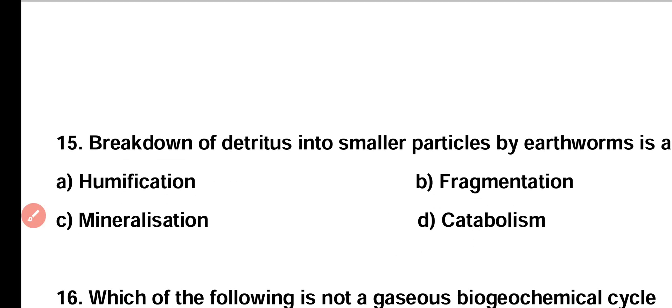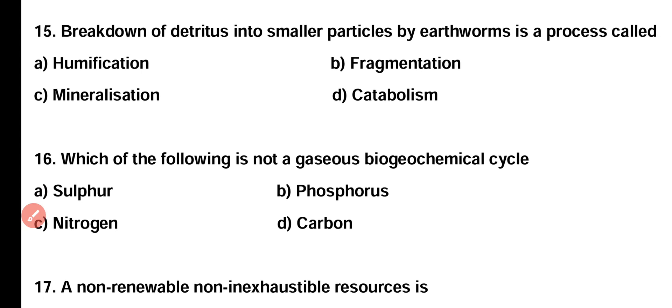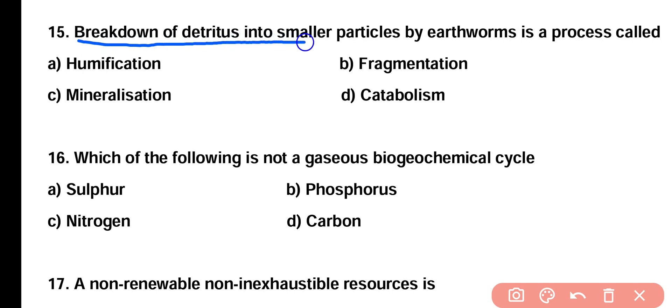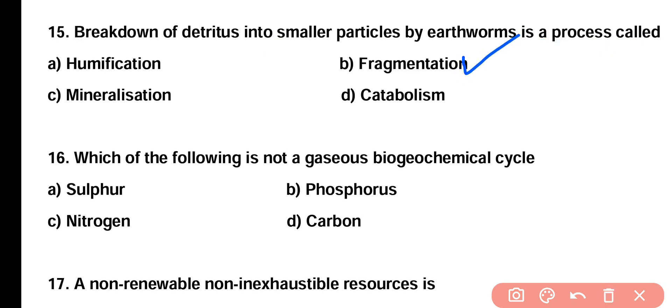Question number fifteen: the breakdown of detritus into smaller particles by earthworms is a process called humification, fragmentation, mineralization, or catabolism? Correct answer is option B — fragmentation.